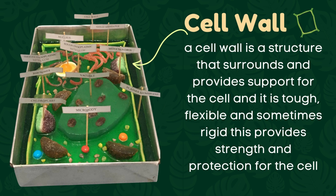The Cell Wall. A cell wall is a structure that surrounds and provides support for the cell. It is tough, flexible, and sometimes rigid, providing strength and protection for the cell. The edible material we use is gelatin, which has the same property as the cell wall in that it is also tough and flexible.